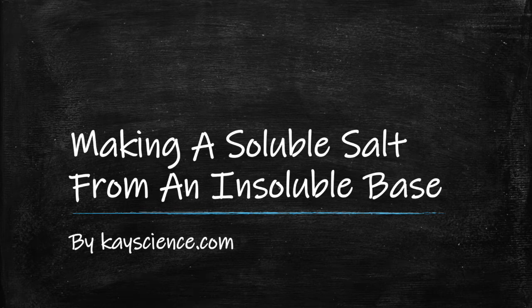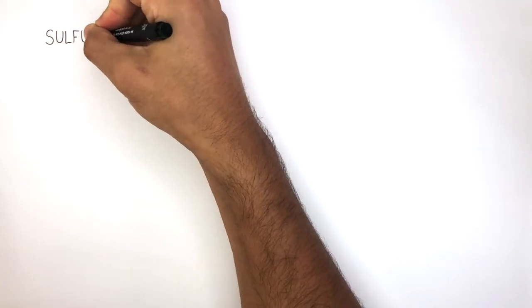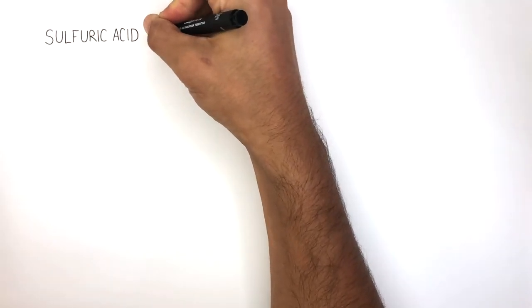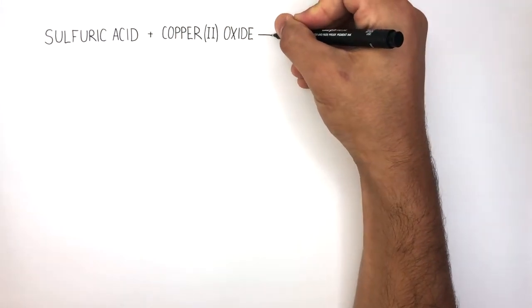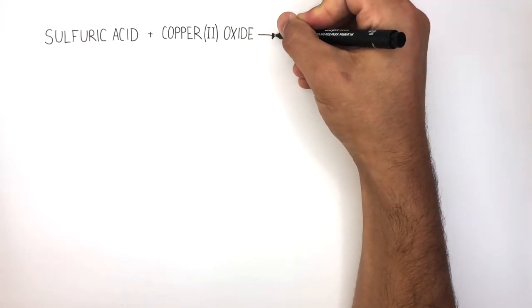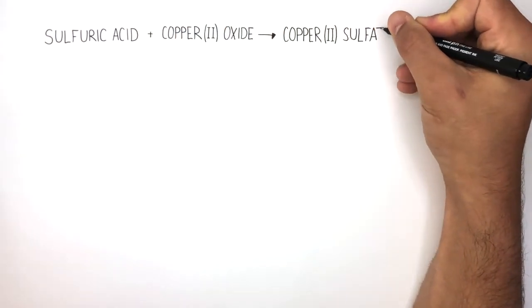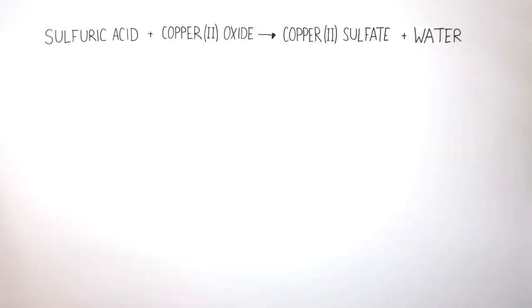Making a soluble salt from an insoluble base, by KScience.com. We can make soluble copper sulfate crystals by reacting sulfuric acid with copper 2 oxide, reacting to form copper 2 sulfate and water.